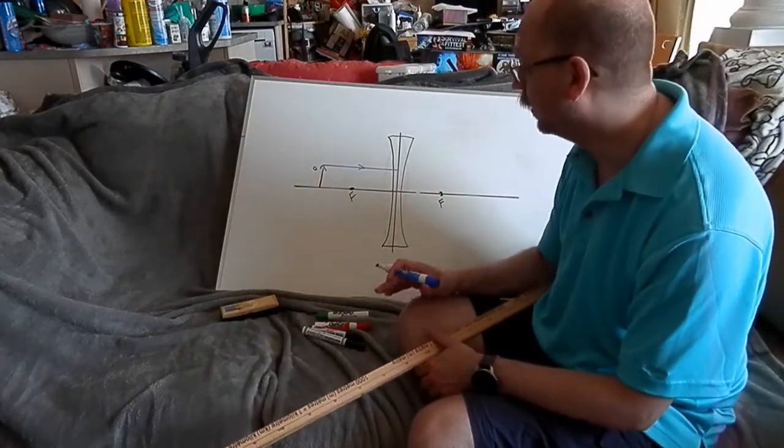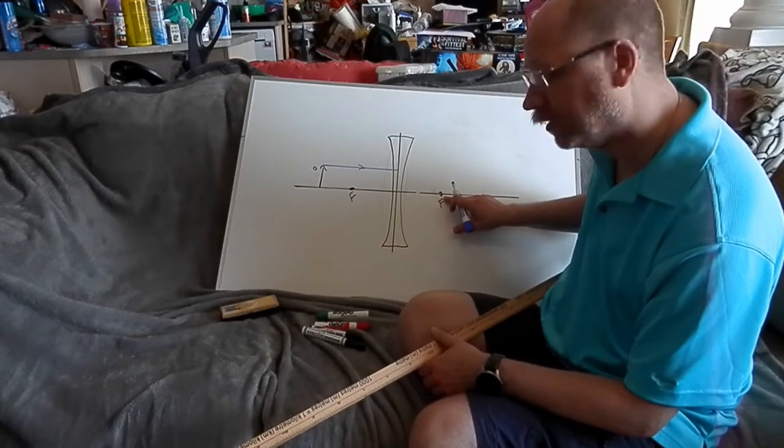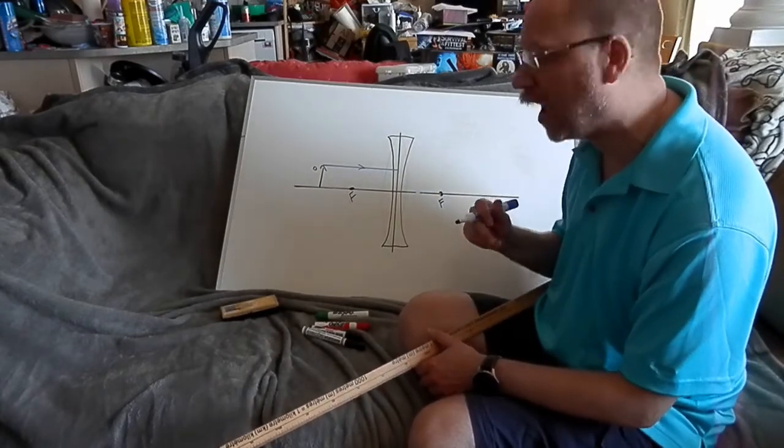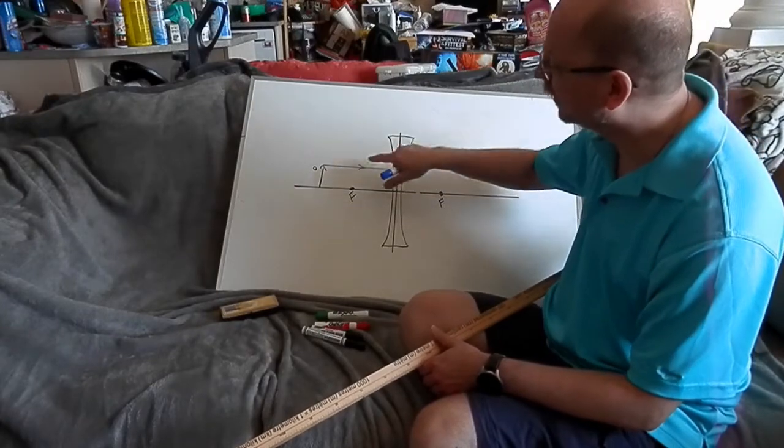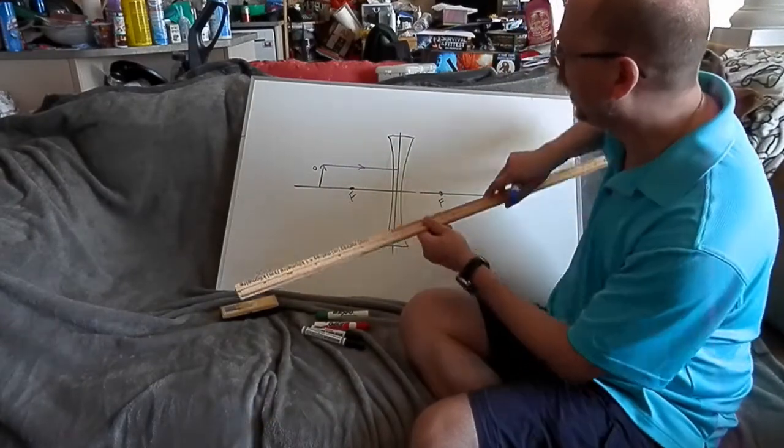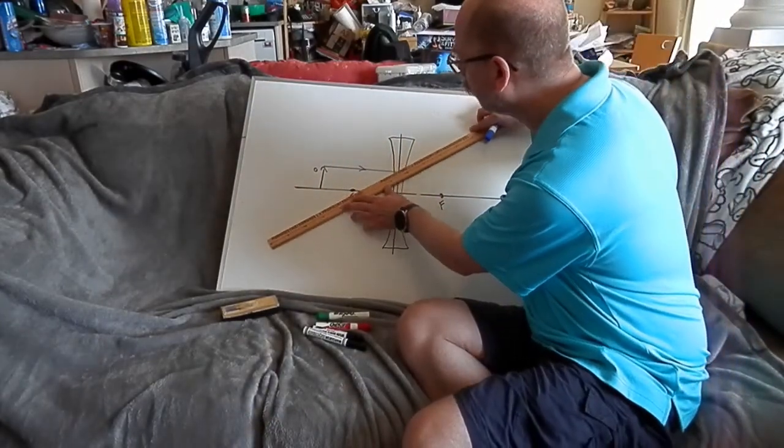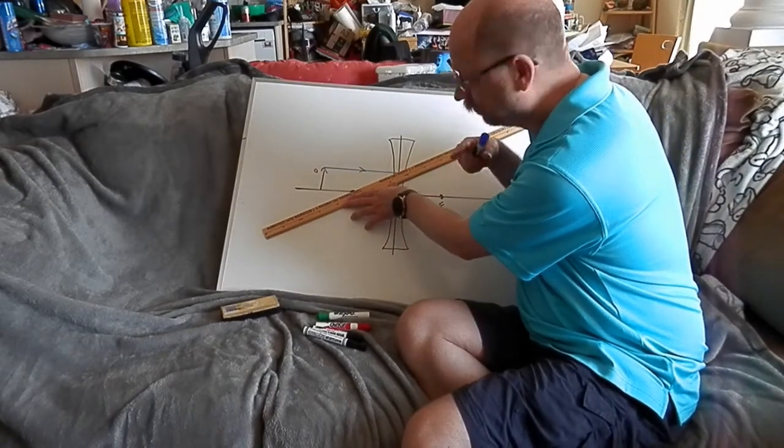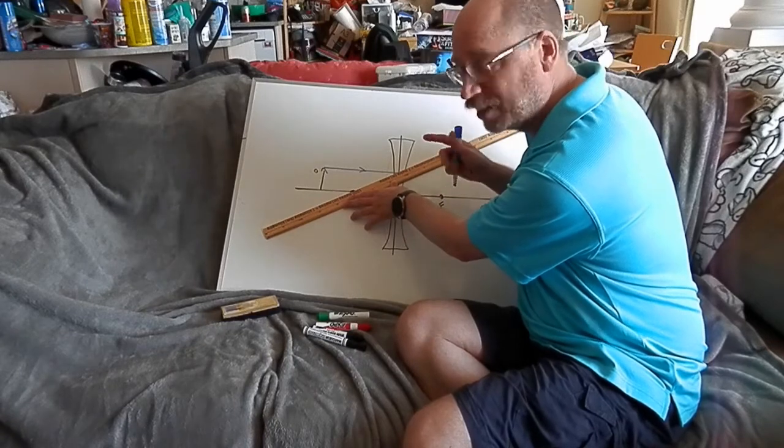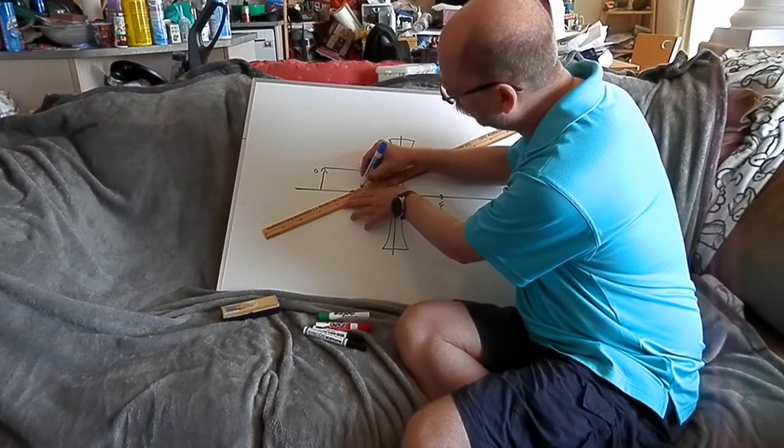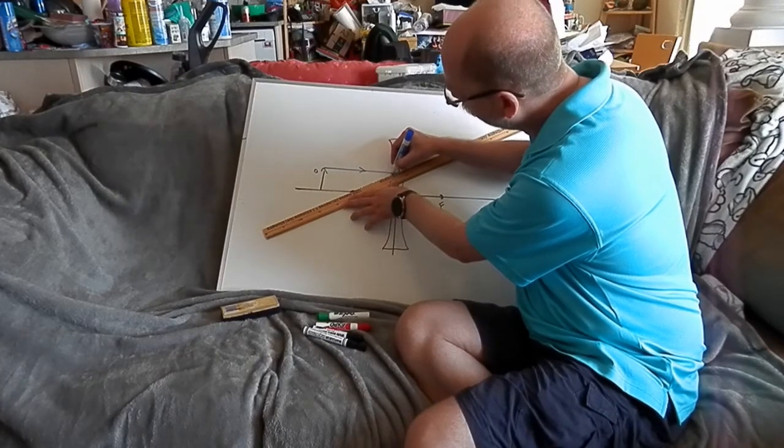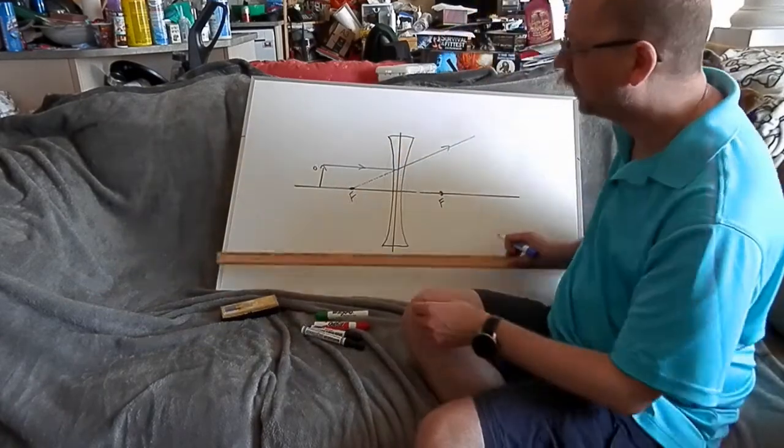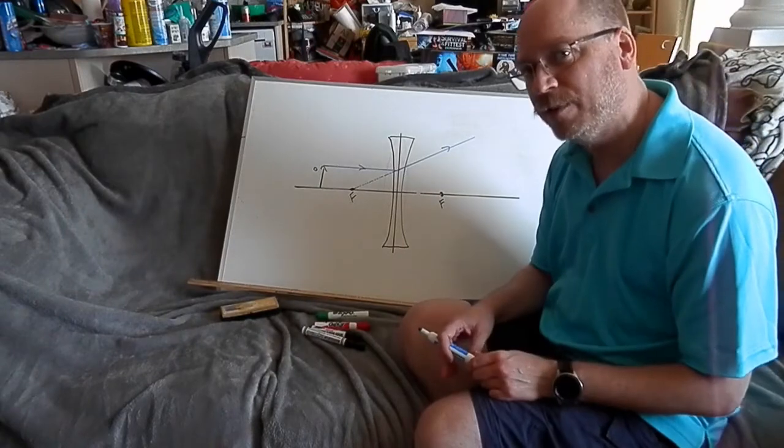So I'm going to draw, again, a ray parallel to the principal axis. Because that part of the rules don't change. Now previously what we did is we refracted to this focal point. Now we're going to refract so that it appears that it came from that focal point. And remember, when we did mirrors, reflected rays could be extended. Same deal here. Refracted rays can be extended.